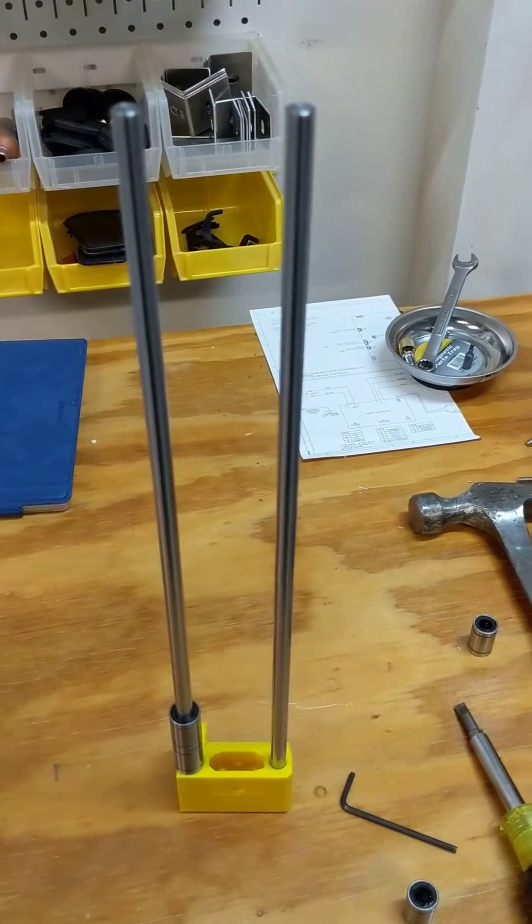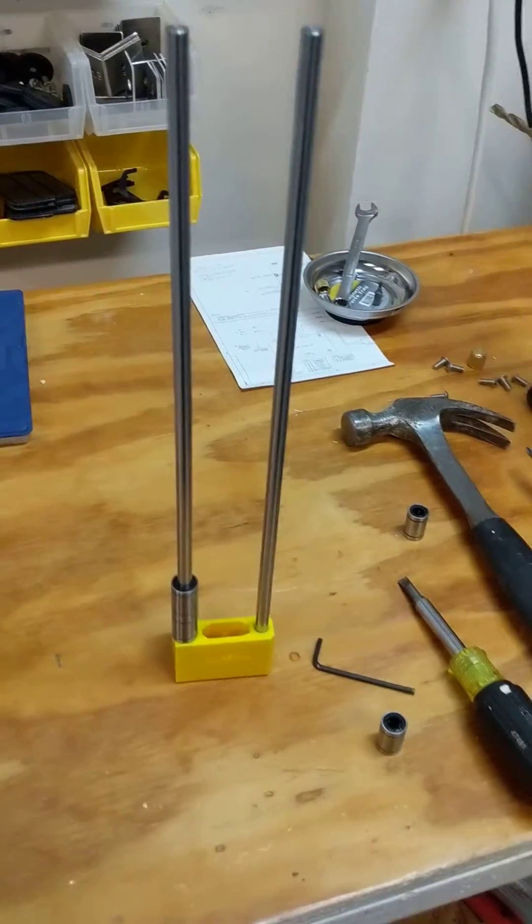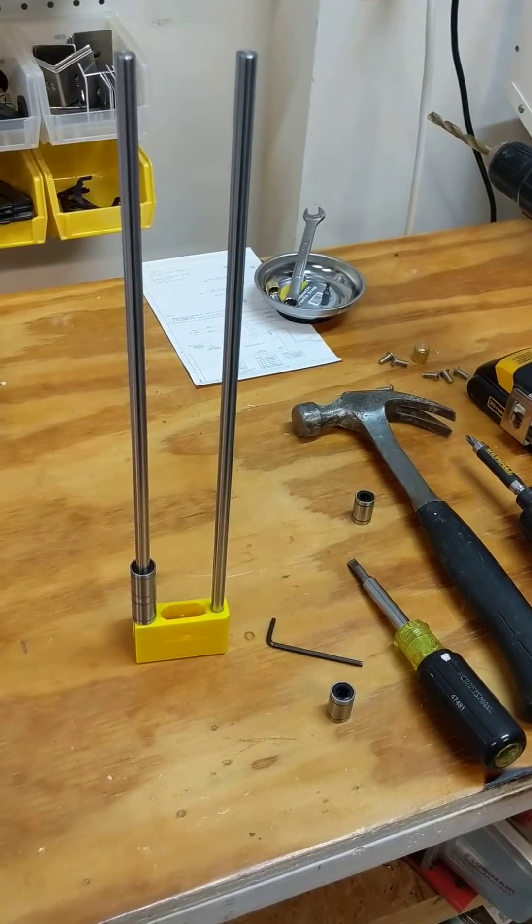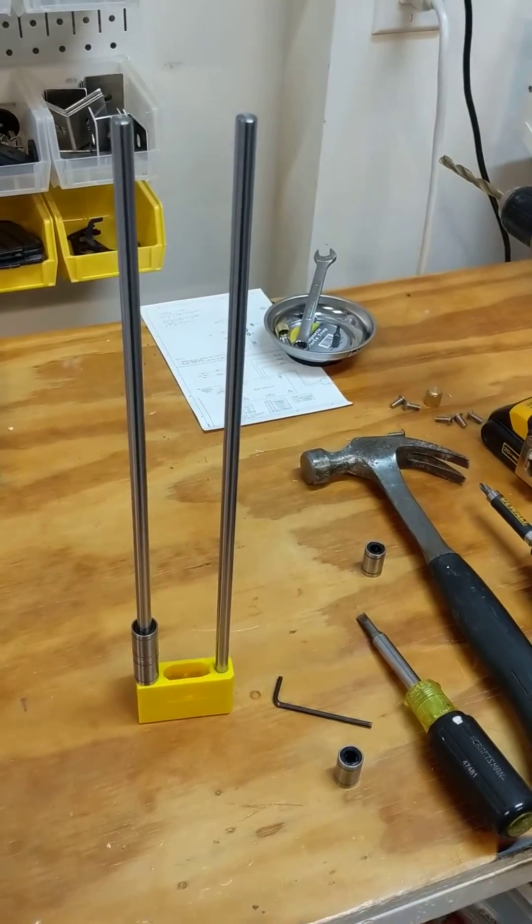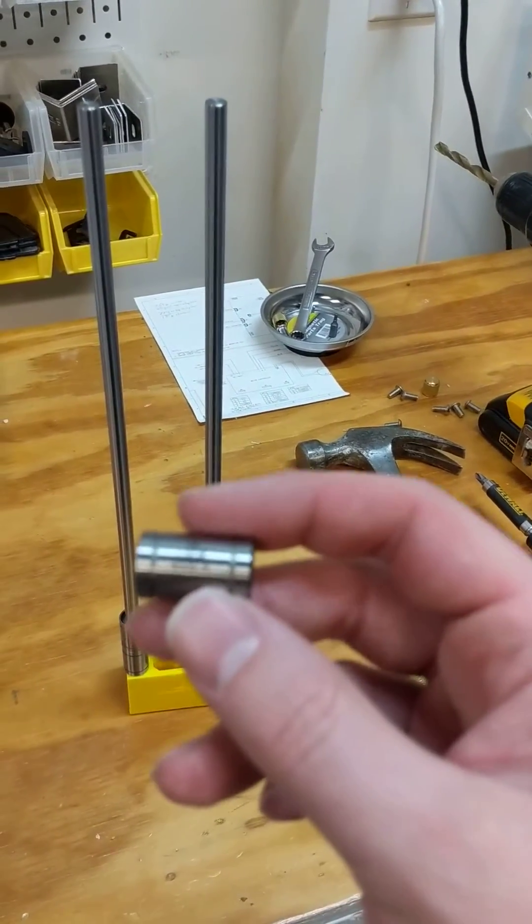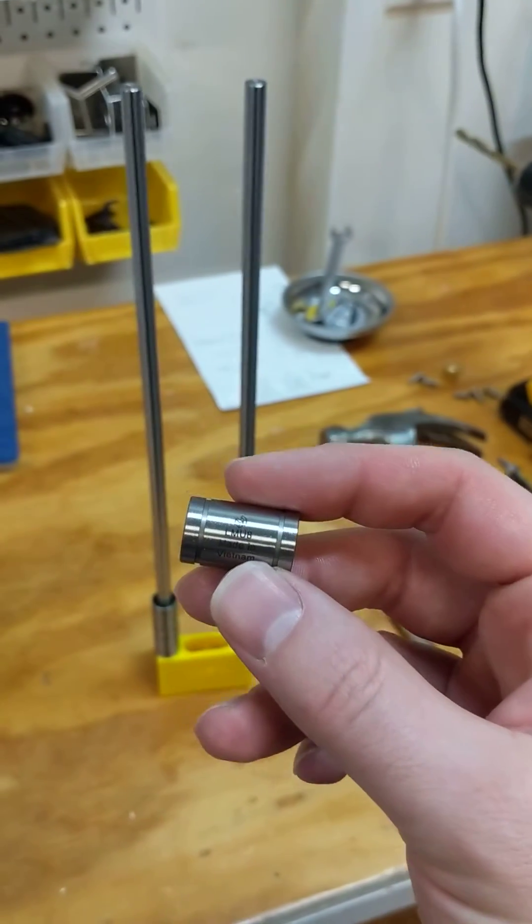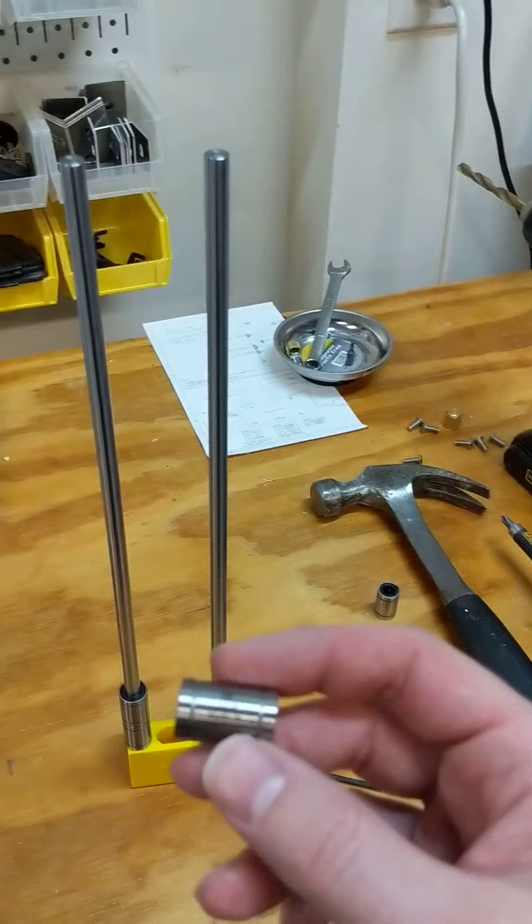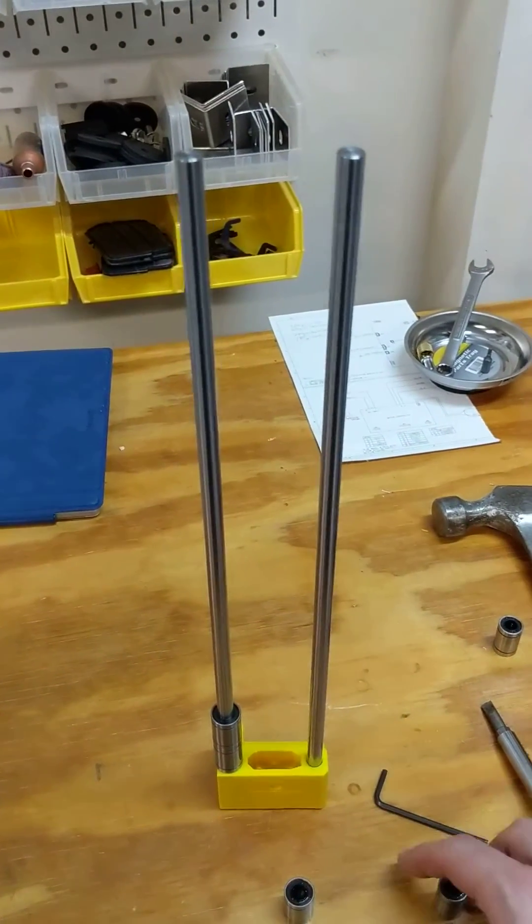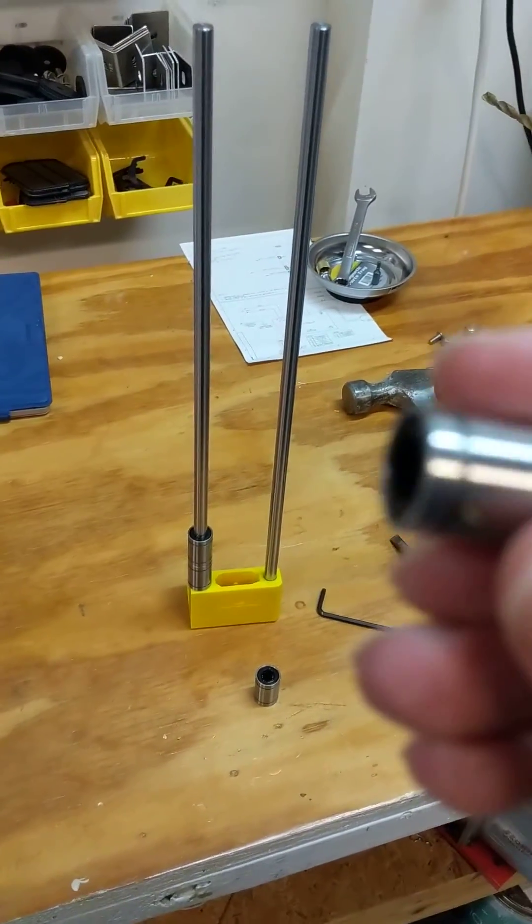So I'm here assembling my Prusa i3 Mark III, upgraded from a Mark II, and I had some leftover Misumi LMU-8 bearings, and I wanted to compare them to the Prusa bearings that are supplied free with the kit.